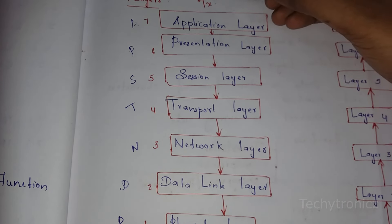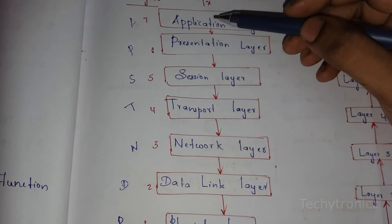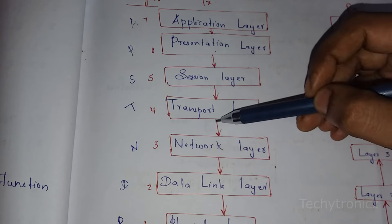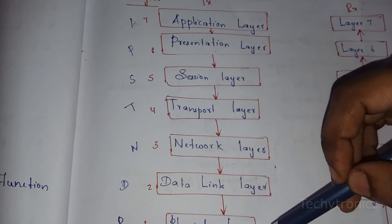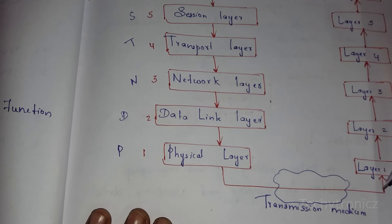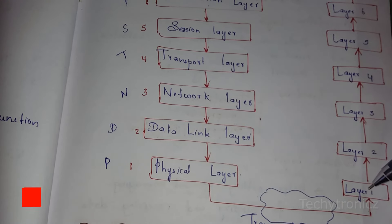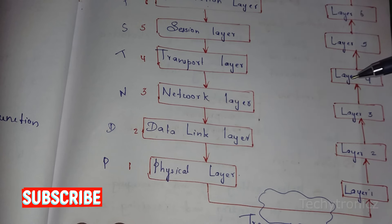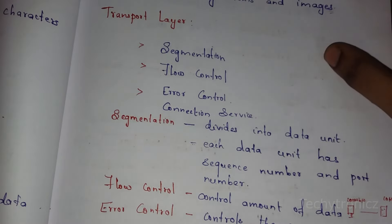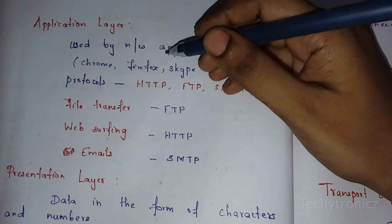So our data, when the transmitter side communicates to the receiver side, on the transmitter side it goes from application layer down to presentation layer, session layer, transport layer, network layer, data link layer, and then physical layer. The physical layer transmits a bit stream via some transmission medium — whether wired or wireless. On the receiver side, it goes back up: physical layer, data link layer, network layer, transport layer, session, presentation, and application layer.